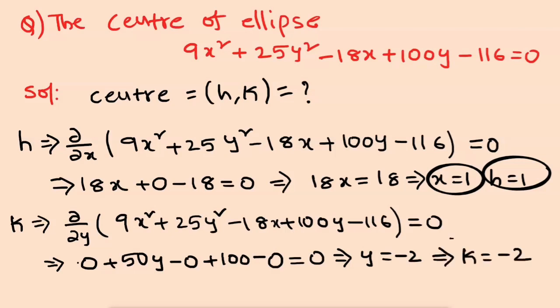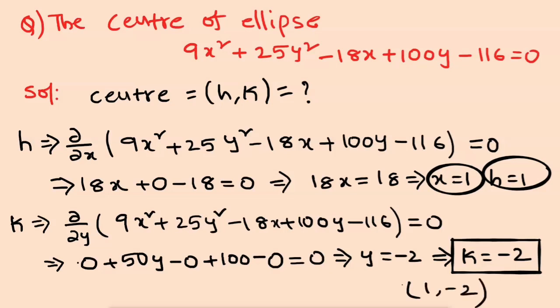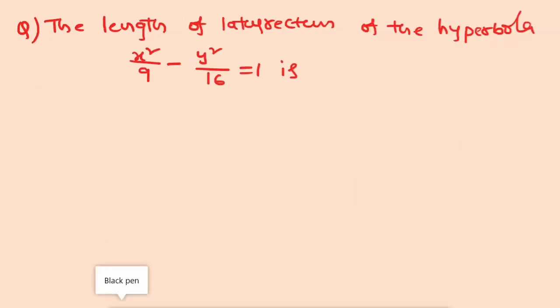The center of the ellipse is (h, k) equals (1, minus 2). We take another question: the length of the latus rectum of the hyperbola x squared by 9 minus y squared by 16 equal to 1.